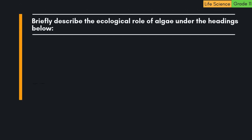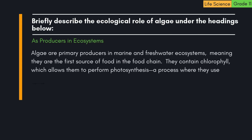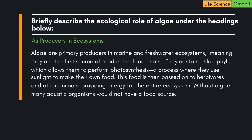Question: Briefly describe the ecological role of algae under the headings below. A. As producers in ecosystems. Algae are primary producers in marine and freshwater ecosystems, meaning they are the first source of food in the food chain. They contain chlorophyll, which allows them to perform photosynthesis — using sunlight to make their own food. This food is then passed on to herbivores and other animals, providing energy for the entire ecosystem. Without algae, many aquatic organisms would not have a food source.